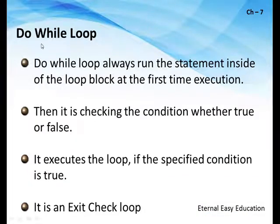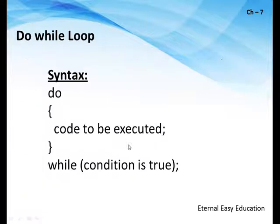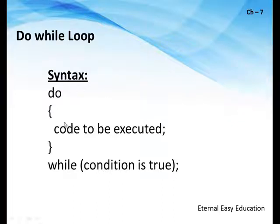Now let's see what is do-while. Same concept as while loop, but the only difference is it is an exit check loop. Exit check means it checks the condition at the end. See the structure: do { execution } while(condition); — followed by a semicolon. The while keyword is at the bottom and the do keyword is on the top, so the condition is checked last.